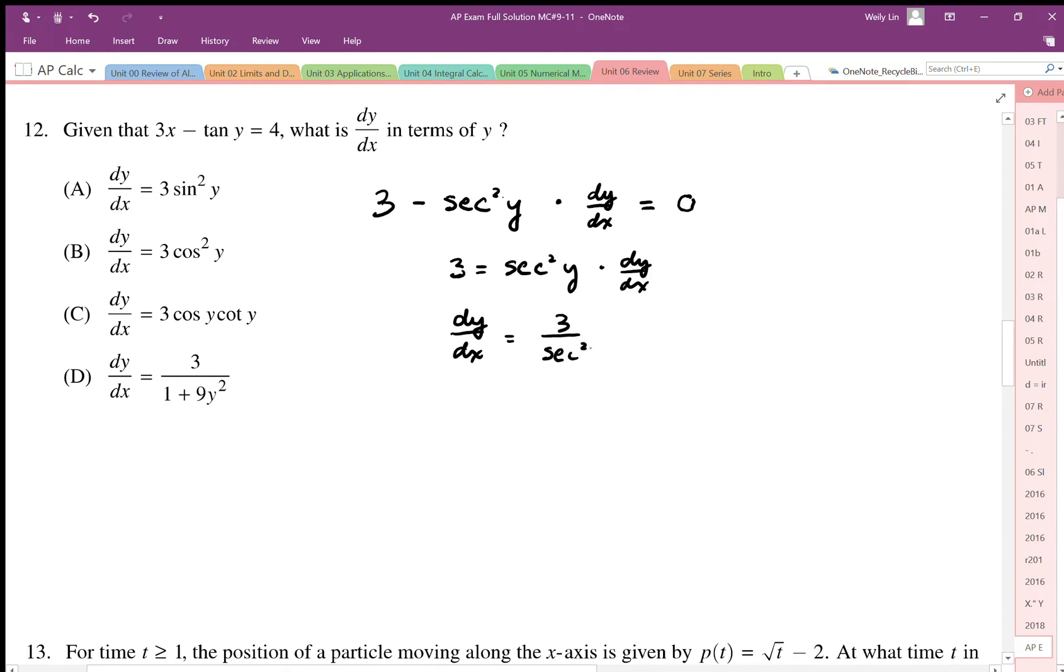Solving for dy by dx, I end up with 3 over secant squared y. In terms of y that looks good. It doesn't match any of these, but I can easily convert this since secant is a reciprocal function of cosine. I can just bring the cosine into the numerator, and that gives us the answer B.